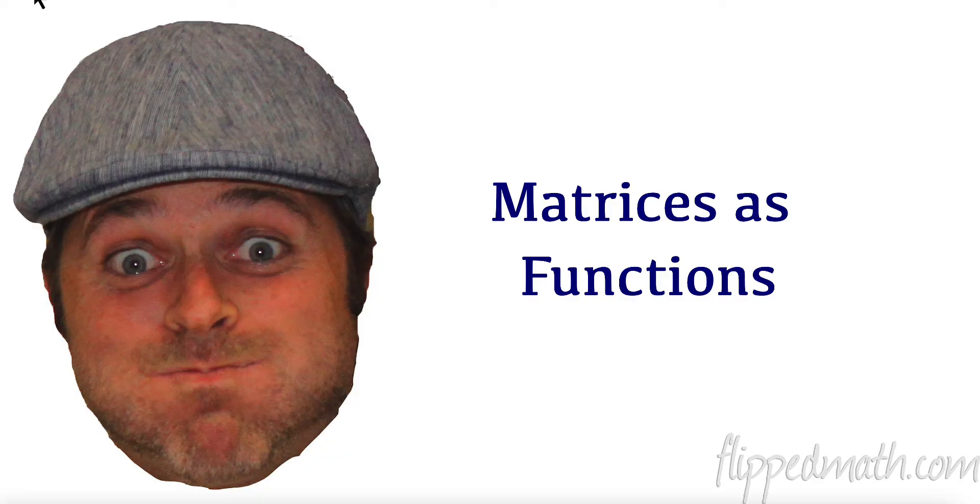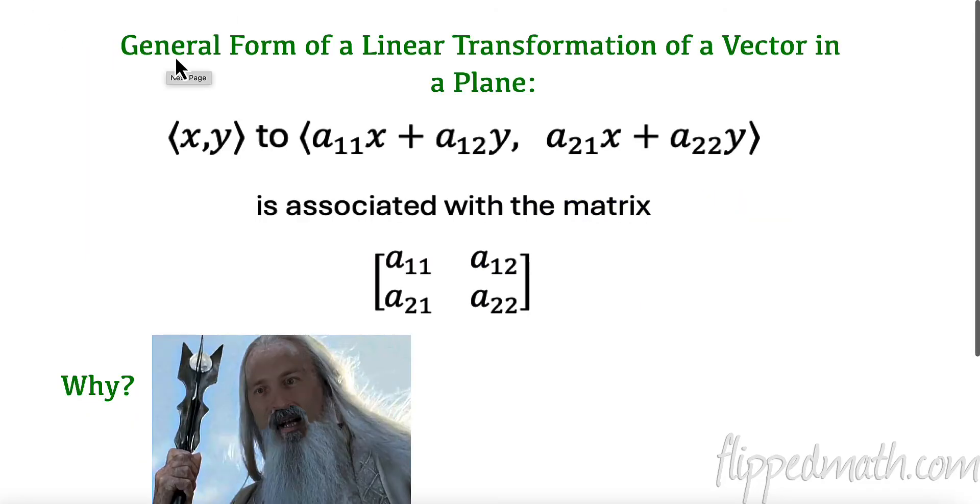Now we're going to do this in two parts. So hopefully it breaks down a little bit, makes it a little bit easier. The first thing we want to talk about is the general form of a linear transformation of a vector in a plane. So this is just the form of what we're going to look at for linear transformations when we have vectors and we're in a plane.